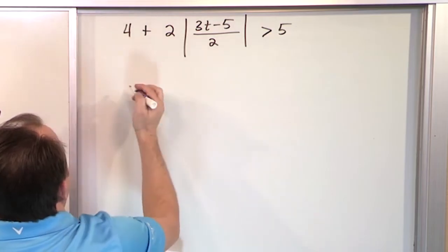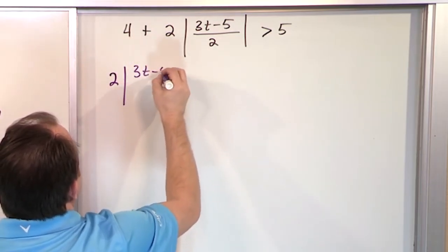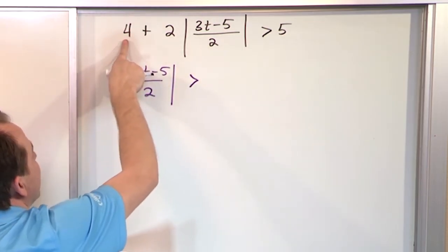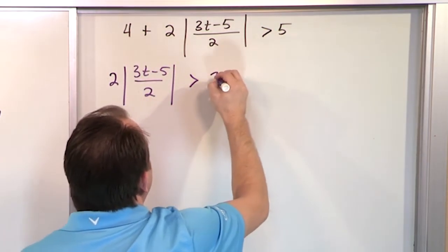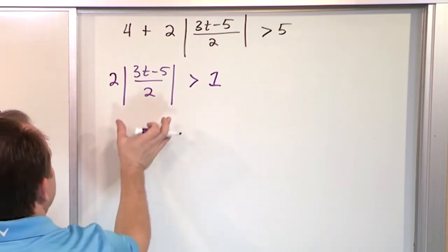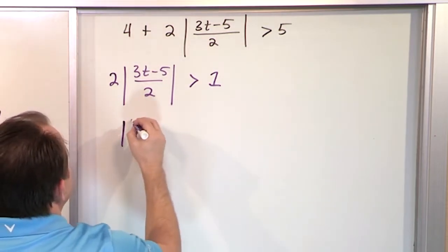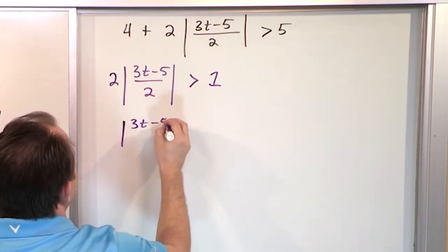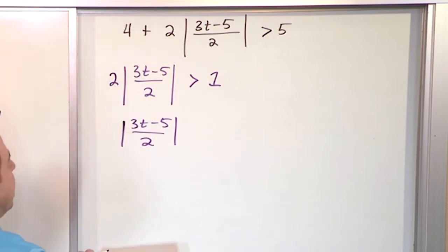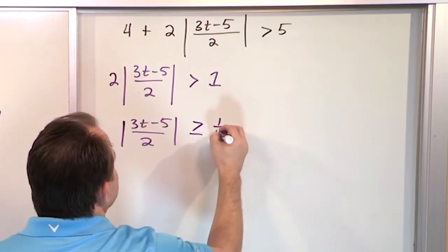Subtract 4. We're going to be left with 2 times the absolute value of (3t minus 5) over 2. Greater than — 5 minus 4 is 1 on the right-hand side. Now we want to get rid of this 2 out front — it's multiplied, so we divide by 2. When we do that we'll have the absolute value of (3t minus 5) over 2, and on the right 1 divided by 2, which we leave as 1 half. We don't have an equal sign under this inequality.